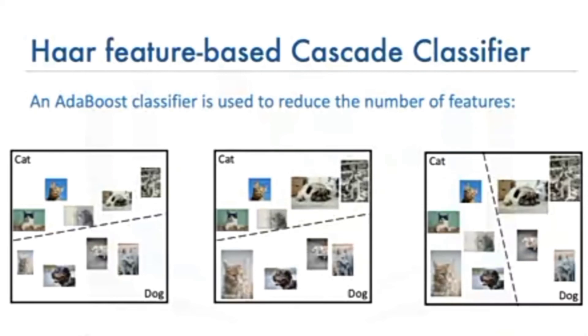In the case of the 24 by 24 window example used by Viola-Jones, over 180,000 features were generated. Using AdaBoost, it cuts this down to about 6,000 features.